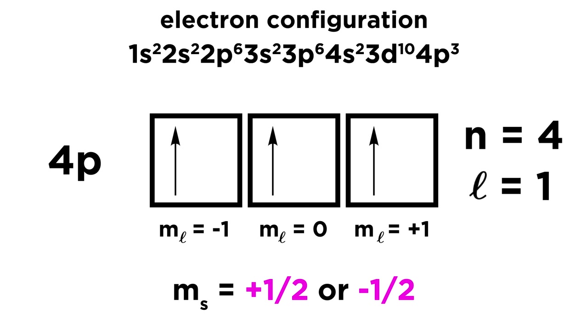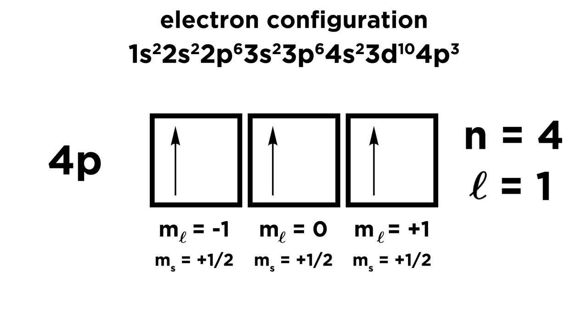Lastly, for m sub S, that's the spin quantum number, that has got to be plus 1 half or minus 1 half. And since all of these must have their spins aligned, we are going to assign them all spin values of plus 1 half. So that is all set for the quantum numbers. All of those have an n value of 4. They all have an L value of 1. They each have their own m sub L value, and then they all have m sub S values of plus 1 half.